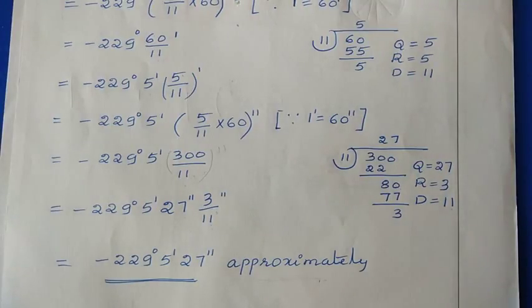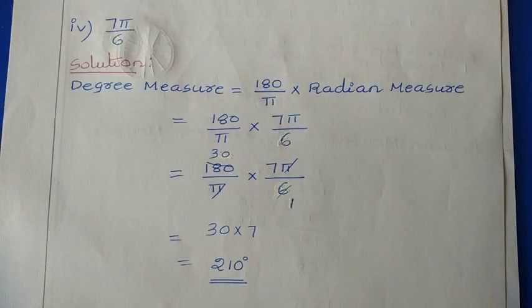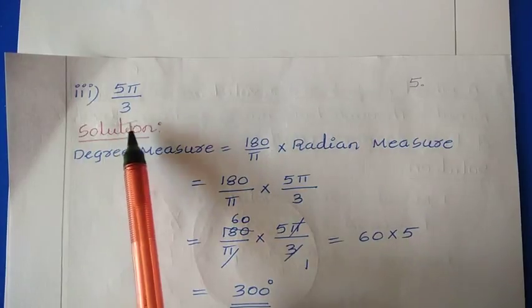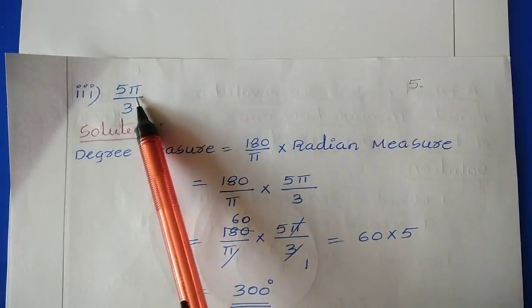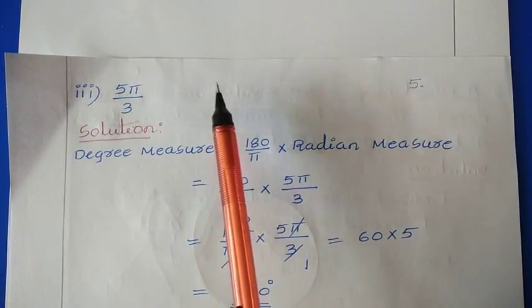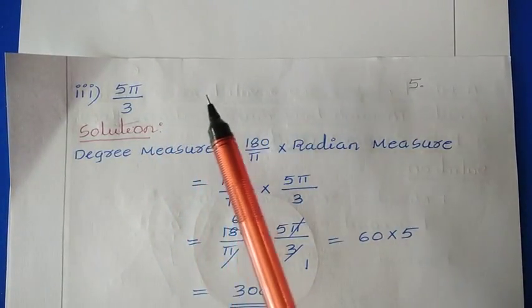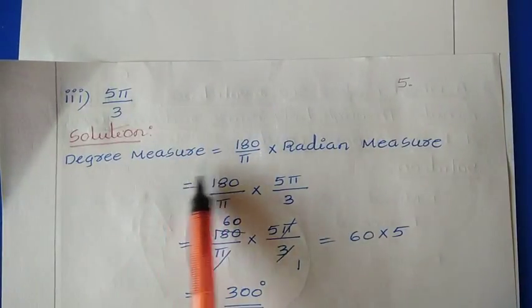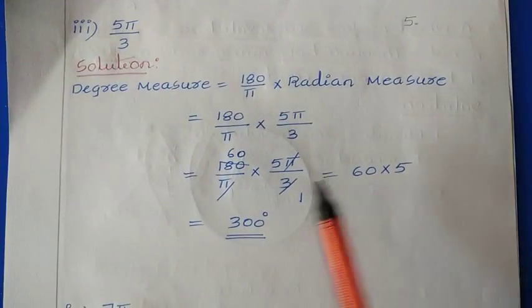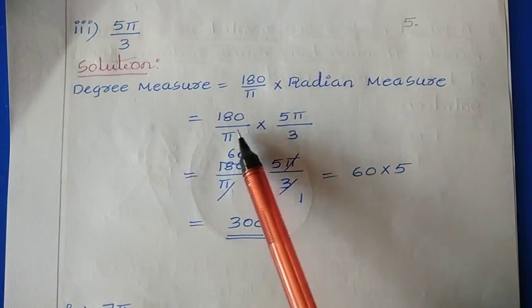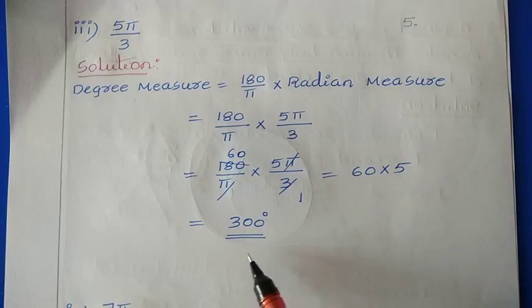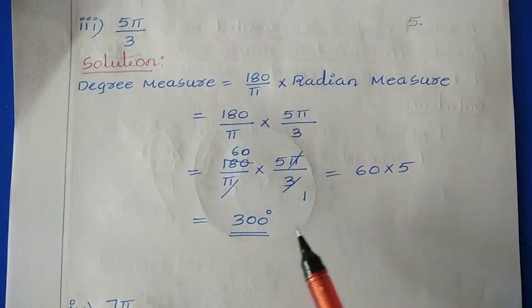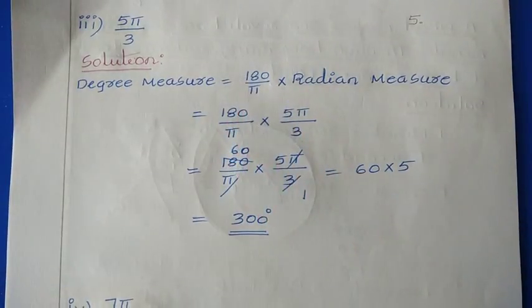Next, third question: 5π/3. When the question is given in this form it is very easy to convert, because π appears in both the radian measure and the formula, so they cancel. Degree measure = (180/π) × (5π/3). Here π cancels, and 180/3 = 60. So: 60 × 5 = 300 degrees. If you have π in the radian measure, it is very easy to get the answer without needing to substitute 22/7.